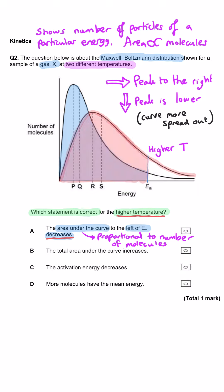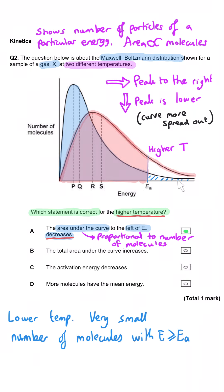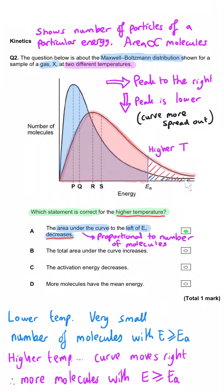For the higher temperature it's the same region, but the graph has shifted. Rather than looking at what's to the left, we can compare what is to the right. For the lower temperature we have just a small area to the right of the activation energy, which is definitely smaller than the area for the higher temperature. Since the area under the curve is proportional to the number of molecules, if more molecules are to the right of the activation energy, fewer must be to the left — so A is correct.